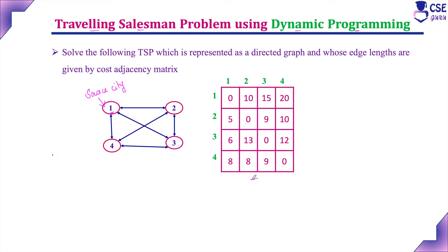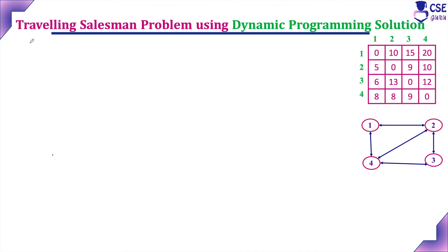This is the given graph and corresponding adjacency matrix. Throughout the solution, we are going to implement the function: g(i, S) = minimum over j belonging to S of c(i,j) plus g(j, S minus j). This is the function we will use throughout the dynamic programming approach for the traveling salesman problem.